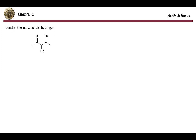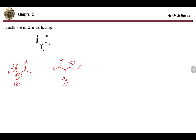Sometimes you will be given different hydrogens in the same compound and asked to predict which is more acidic — use the same strategy of drawing conjugate bases. Draw the first conjugate base by removing Ha and keeping Hb, then draw the second by removing Hb and keeping Ha. In the first case, the anion can resonate, while in the second it cannot. Since there is resonance when Ha is removed but no resonance when Hb is removed, Ha is the more acidic proton.